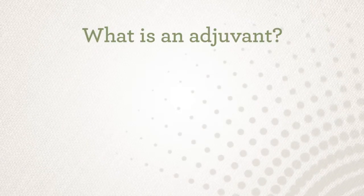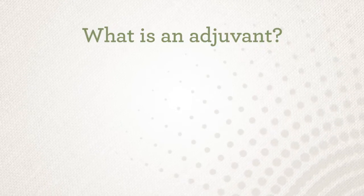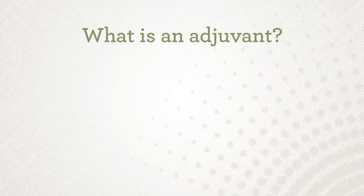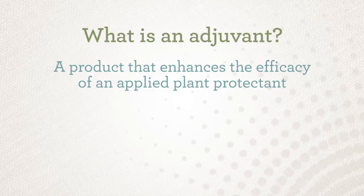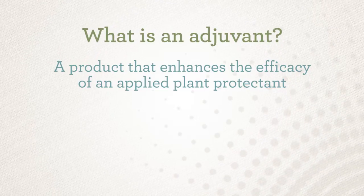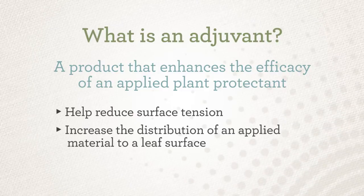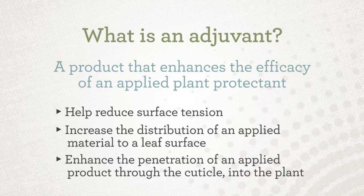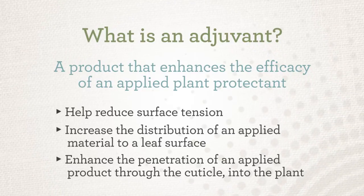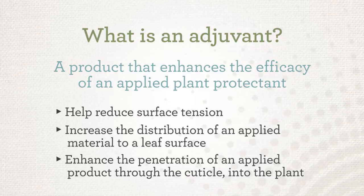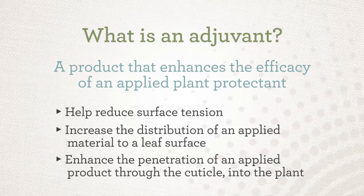So what is an adjuvant? A useful definition for our industry would be: a product that enhances the efficacy of an applied plant protectant. Adjuvants serve to help reduce surface tension, increase the distribution of an applied material to a leaf surface, and on occasion enhance the penetration of an applied product through the cuticle into the plant. They increase efficiency by spreading the solution across the leaf surface and improving absorption through the cuticle — achieved by reducing the surface tension of water.